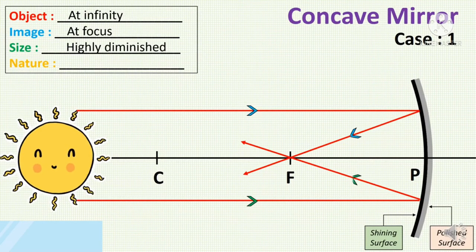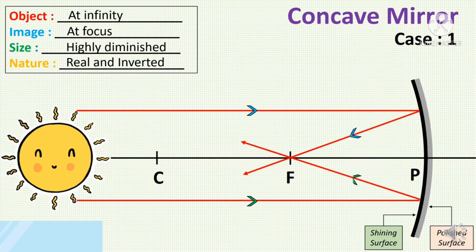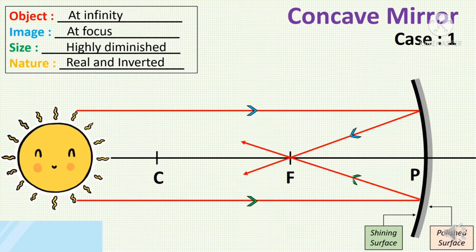Observe the properties of the image: when the object is at infinity, the image is formed at the focus, highly diminished, real, and inverted.